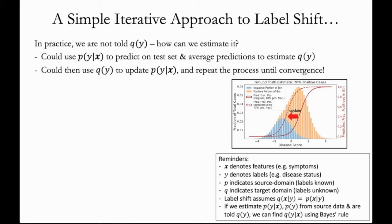So let's see how this algorithm behaves in the example from before where the ground truth fraction of positive cases in the target domain was 70%. And the total height of each bar shows the fraction of total patients falling in a given bin. The dashed line shows the ideal updated predictor. The ratio of orange to blue in each bin is equal to the predicted ratio of positives to negatives according to the updated predictor.